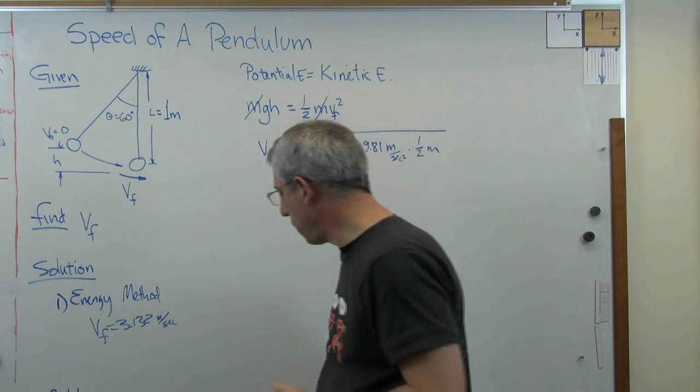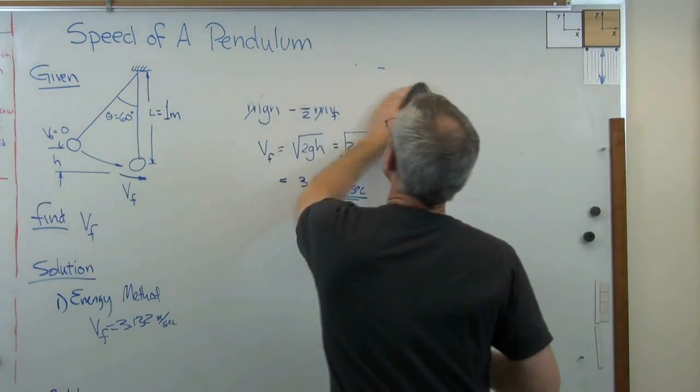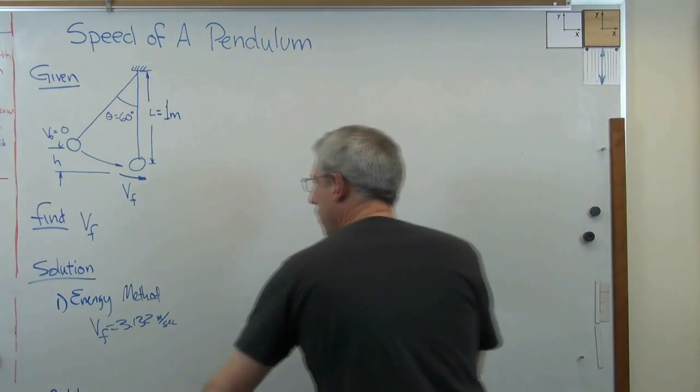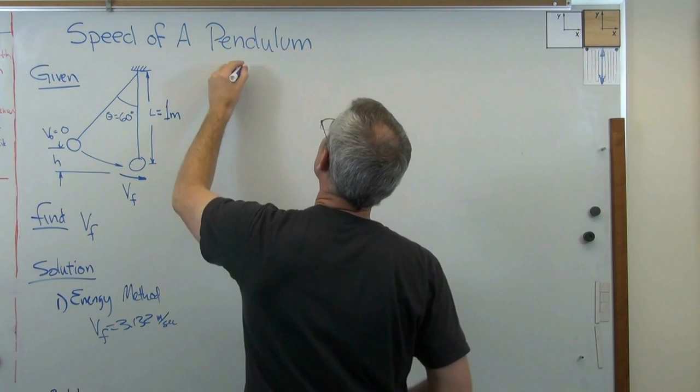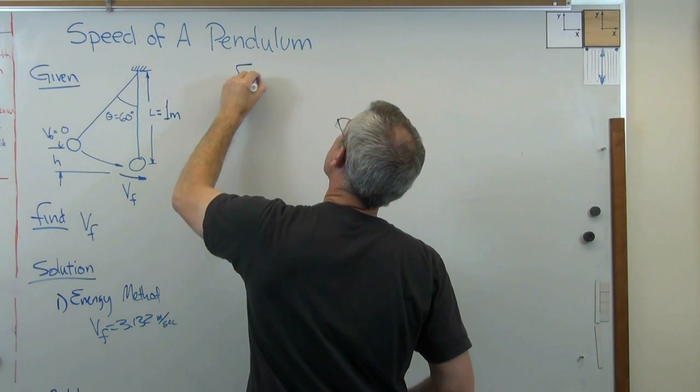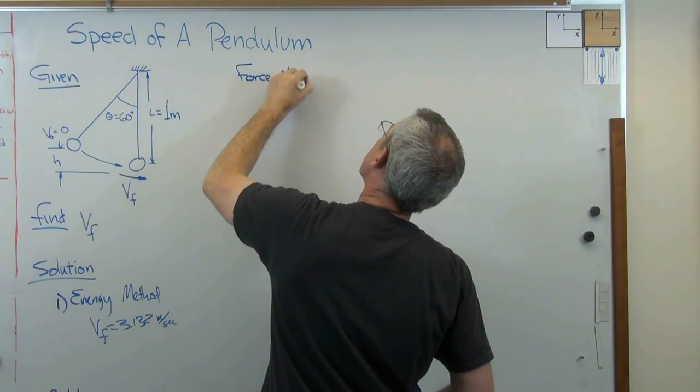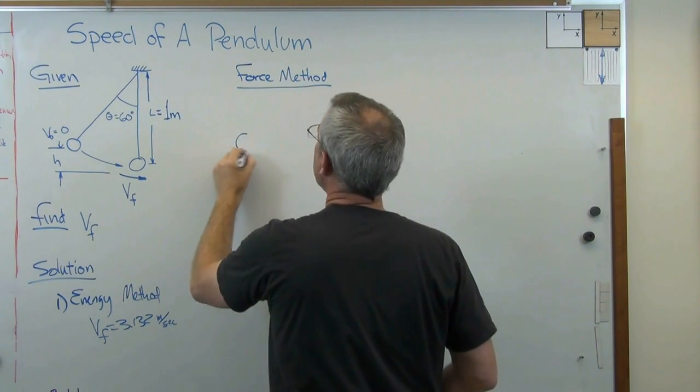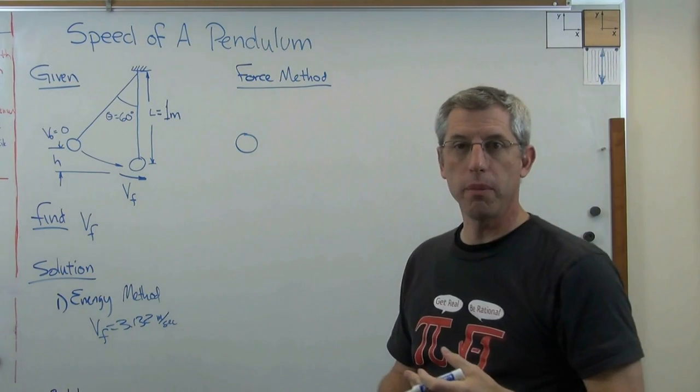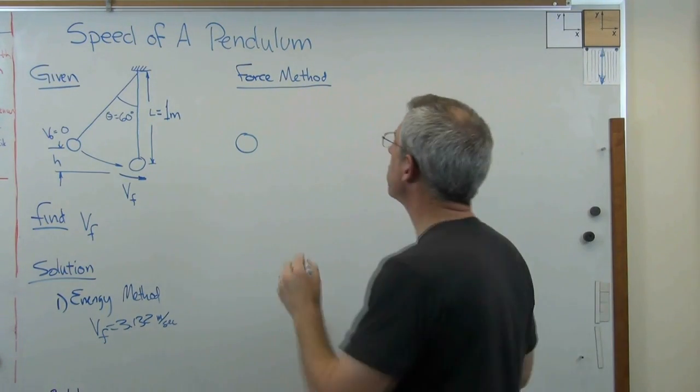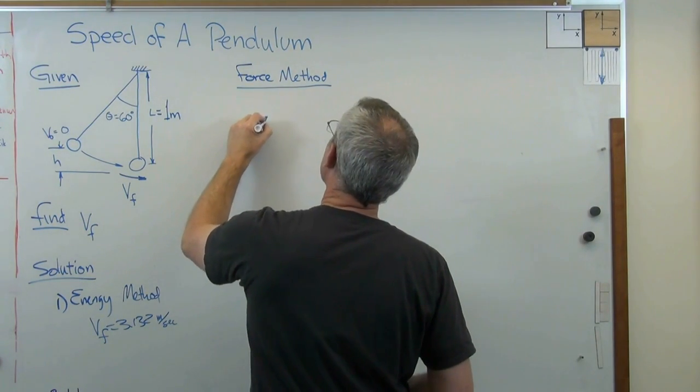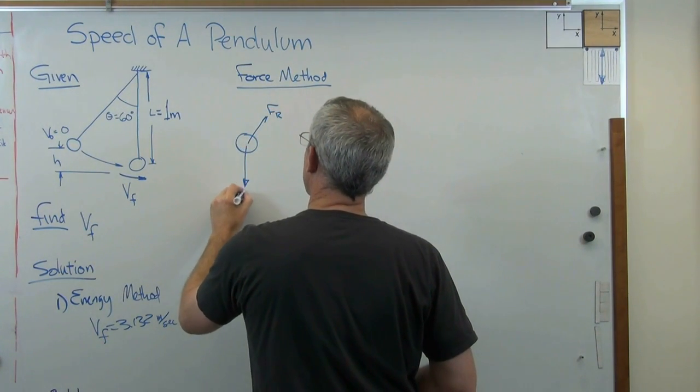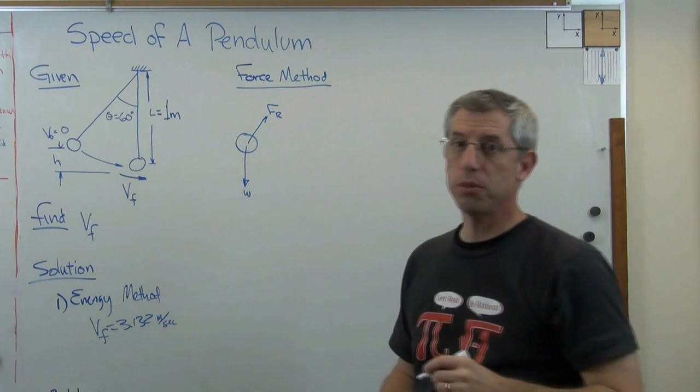The hard way, which is often the one they want you to do in the book, requires us to start looking at forces. So let's do the force method here. If you draw the pendulum bob right there, that little mass at the end of the pendulum, let's draw the forces acting on it. There's a force in the radial direction and there's weight. That's pretty much it.